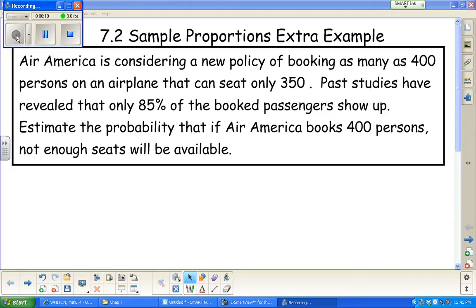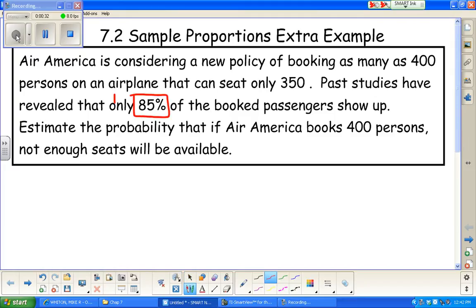So the situation: Air America is considering a new policy of booking as many as 400 persons on an airplane that can seat only 350. Past studies have revealed that only 85% of the booked passengers show up. Estimate the probability that if Air America books 400 persons, not enough seats will be available.